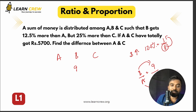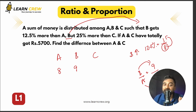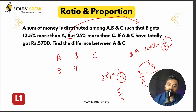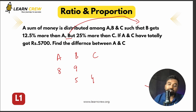B also gets 25% more than C. 25% = 1/4, meaning C is the base (4) and B gets one more (5). So B:C = 5:4. Now we have B = 9 relative to A, and B = 5 relative to C, giving us B's ratio values from both comparisons.